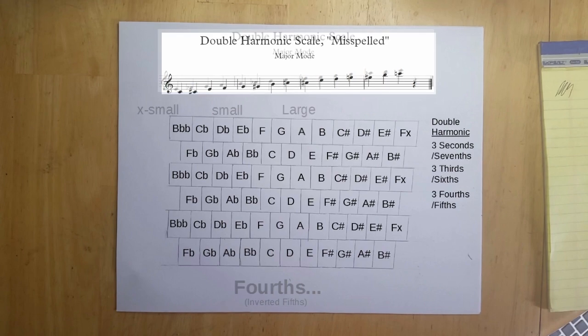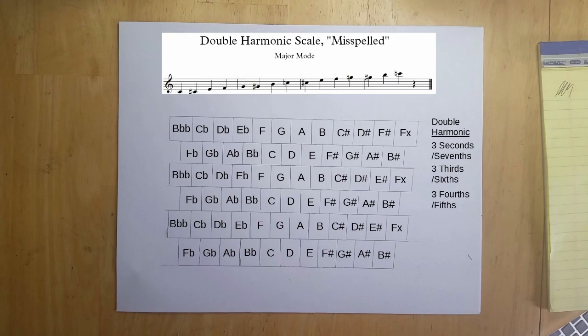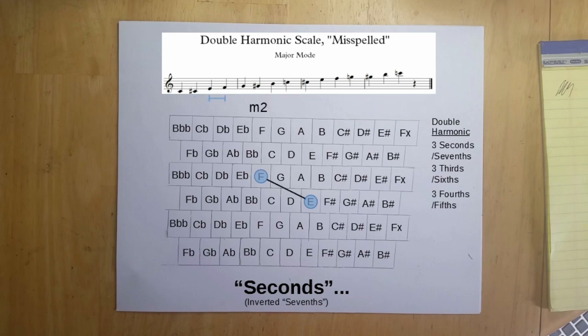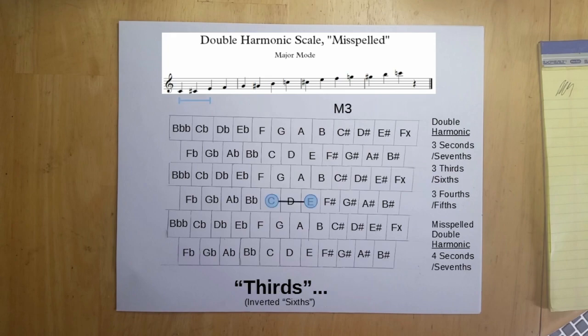Whereas the misspelled version has four sizes of 2nd and 7th, five sizes of 3rd and 6th, and four sizes of 4th and 5th.